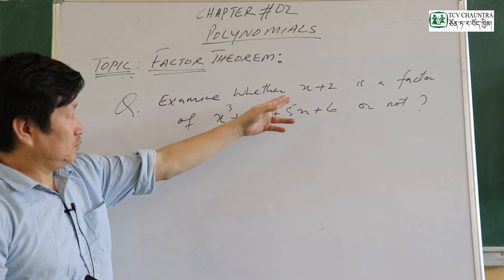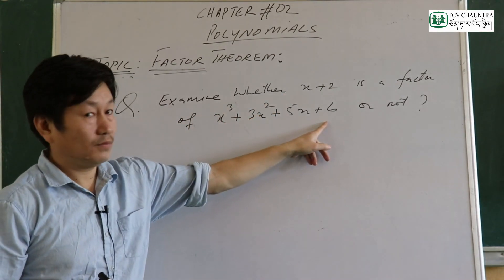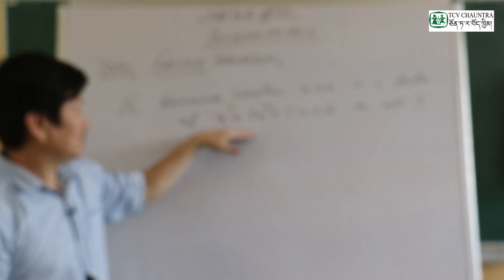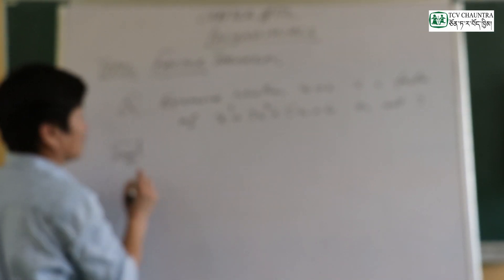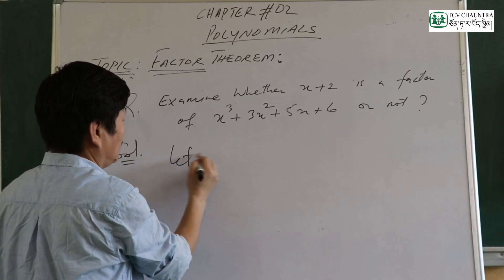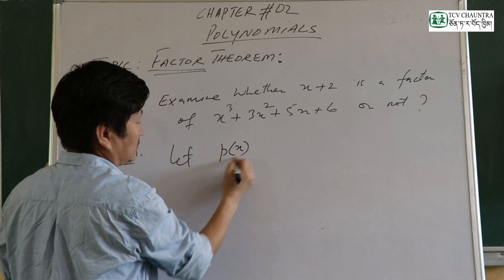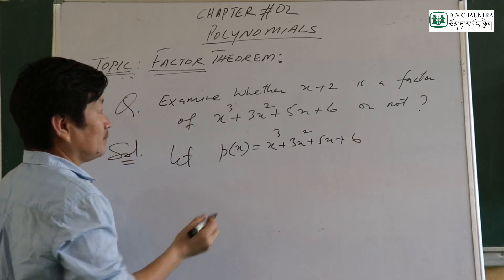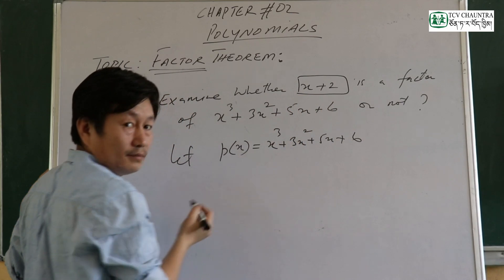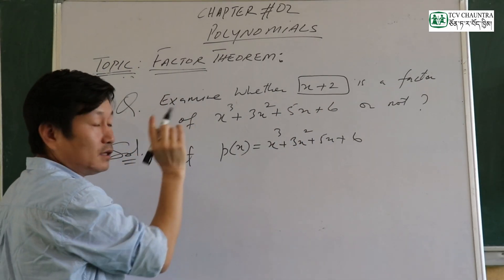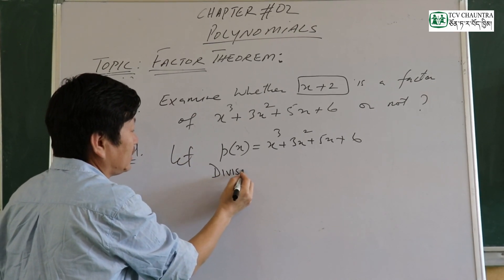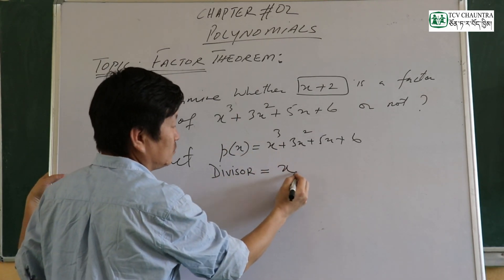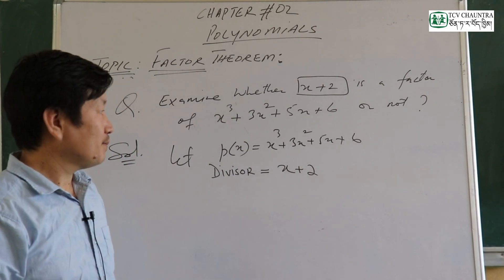Examine whether x plus 2 is a factor of the cubic polynomial. The cubic polynomial is degree 3. Then x plus 2 is the factor to examine. Given polynomial is p(x). The divisor is x plus 2, which is in the form x minus a, so a equals negative 2.